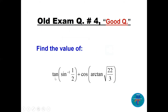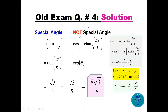Question four: find the value of tan(sin⁻¹(1/2)) + cos(arctan(√22/3)). The first angle is a special angle: sin⁻¹(1/2) = π/6, and tan(π/6) = √3/3.